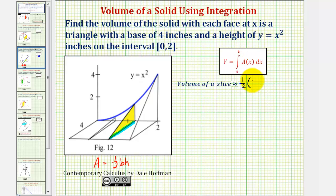So we have one-half times four times the height, which would be this length here. Notice how this is determined by the function value, y equals x squared. So the height would be x squared.